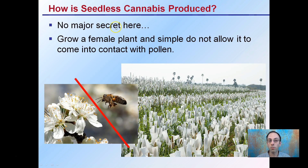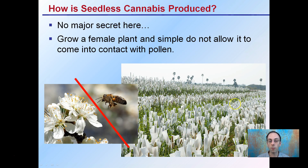How does seedless cannabis get produced? The goal is to grow a female plant and simply not allow pollen to come in contact with it — much like growing a flower without allowing a bee to contact it. Here we see a research plot with bags over all of the flower structures, eliminating pollen transfer or allowing only specific crosses to be made. So seedless cannabis is produced quite simply by preventing pollen from coming in contact with the female flower.